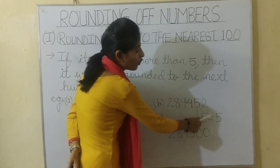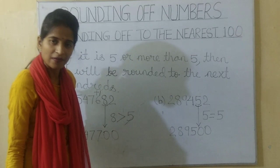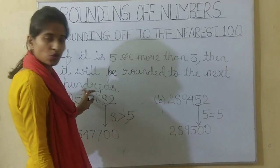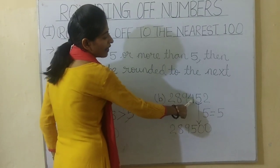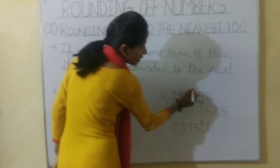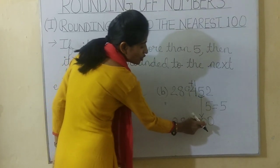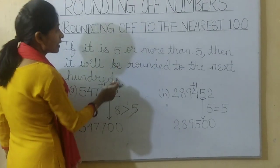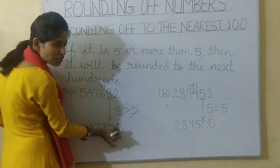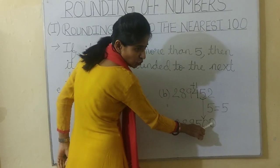Now look at the second example. Here the ten's digit is equal to 5. Then also, it will be rounded to the next hundred. So 400 will become 500, and the last two digits will be 0 and 0. So the answer will be 289500.